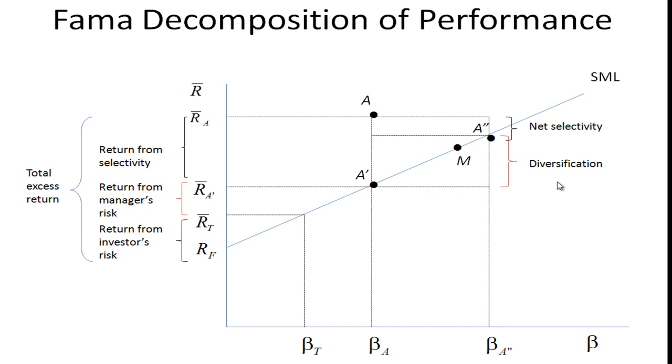He also does a second decomposition. There's a target risk that the investor wants, and we call that beta T. If the portfolio manager is taking on this target risk that the investor specifies, then given the security market line, he should get a return of R bar T. So the difference between R bar T and RF is the return from the investor's risk, the risk that the investor earns over the risk-free rate for being willing to take some risk rather than buying treasury bills or some other risk-free asset.